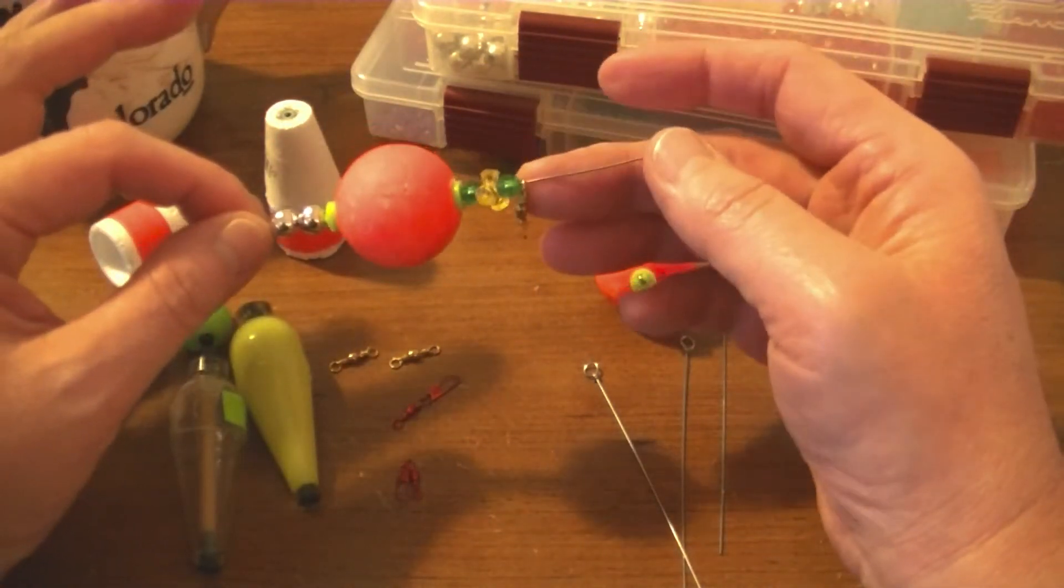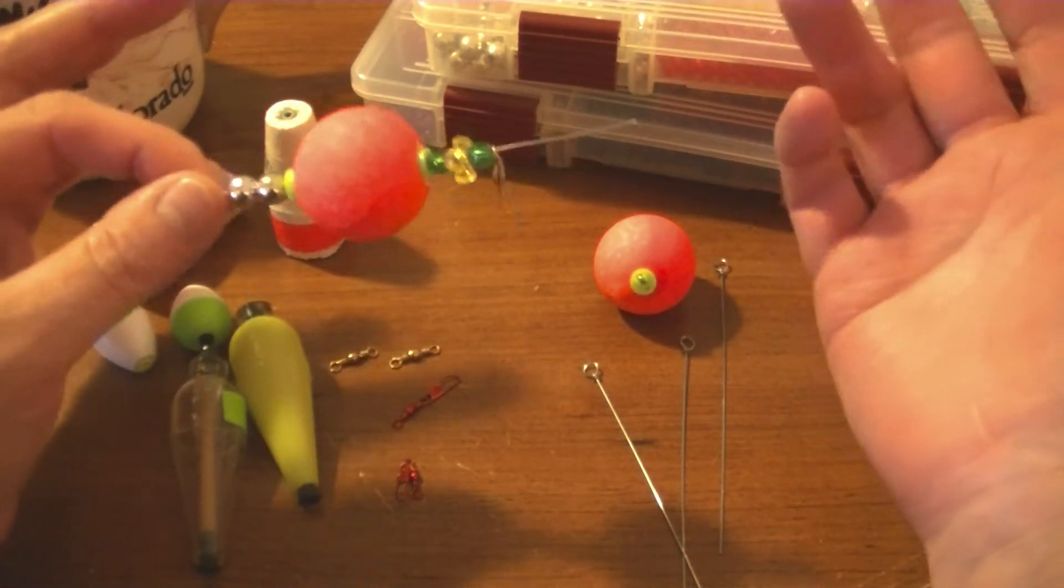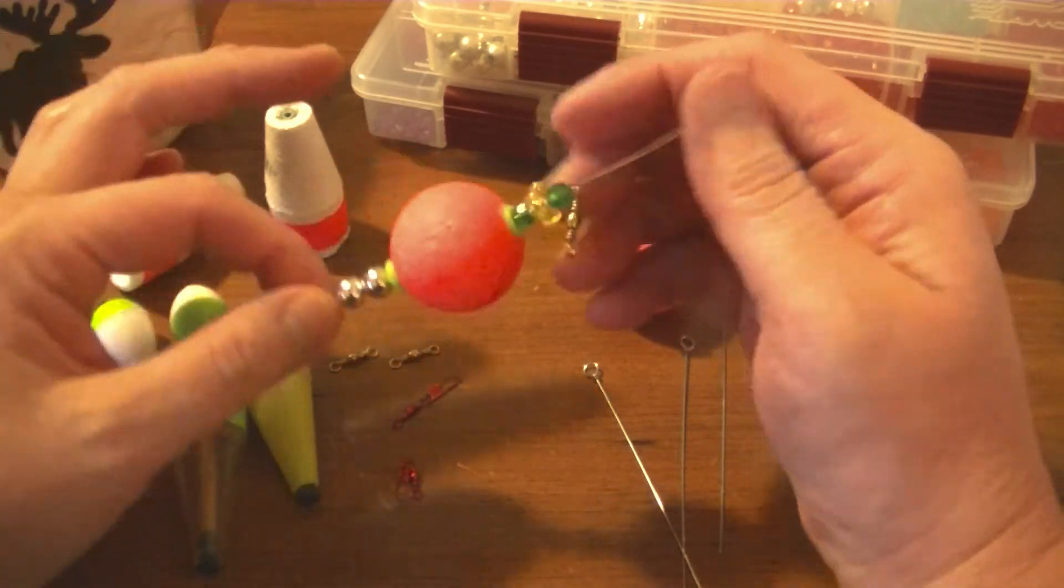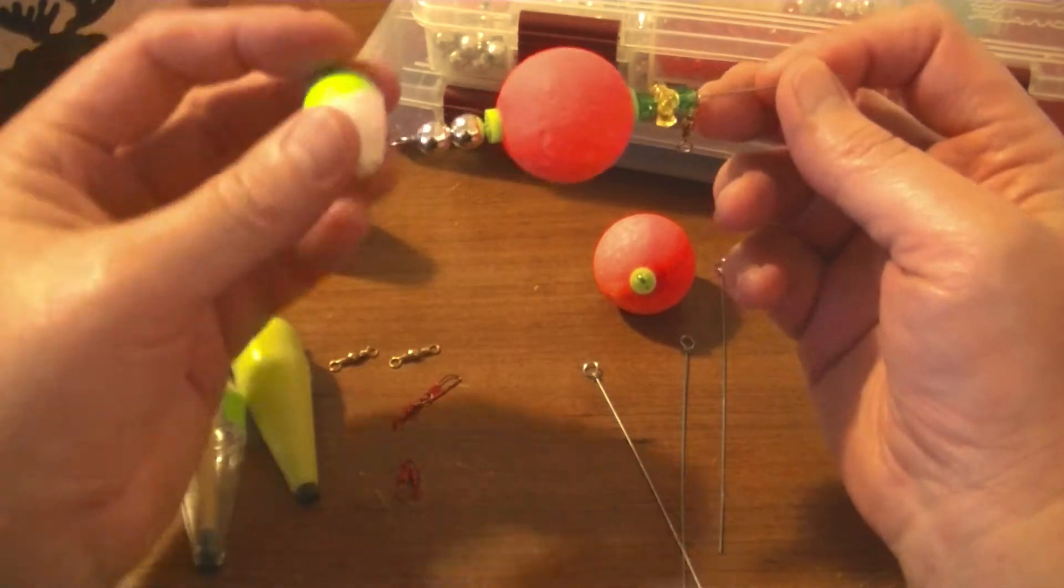I was thinking why wouldn't it work in freshwater for rainbow trout and brown trout and even bass. And you could even make one on a much smaller level.